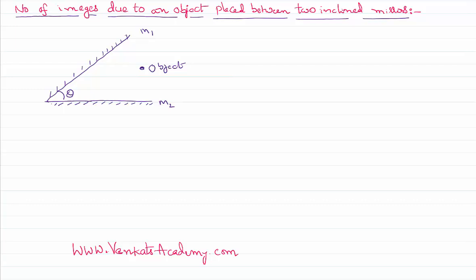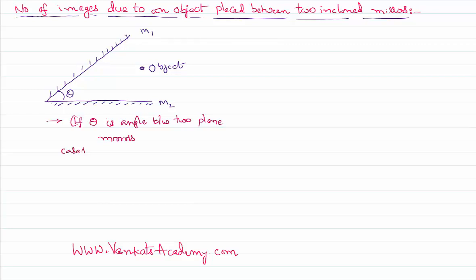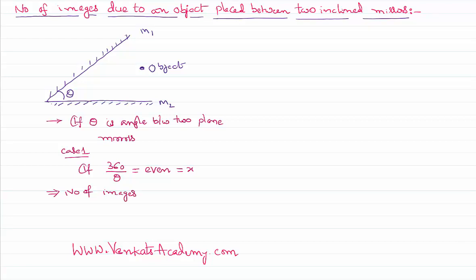There are three different possibilities. If theta is the angle between two plane mirrors, Case 1: if 360 divided by theta gives an even number x, then the number of images formed is x minus 1.